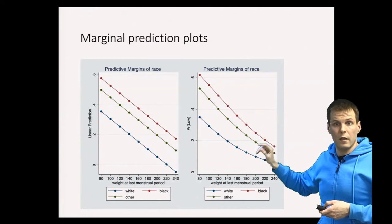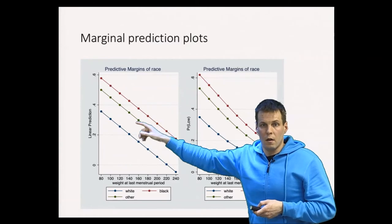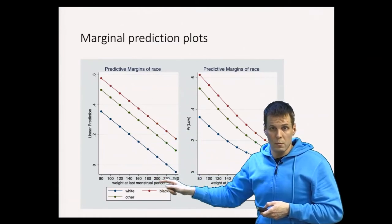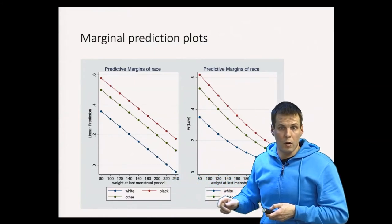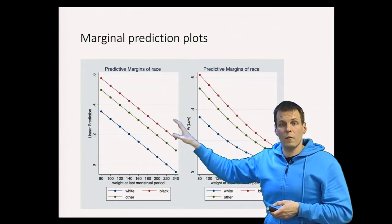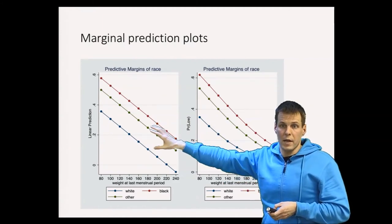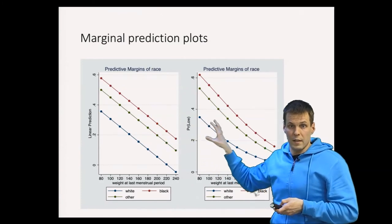But if we don't have any mothers here, so if all white mothers are quite light, then the fact that we predict implausible values when we go beyond our data is not really a problem. Which one of these is better can be justified based on theory, but you can also check empirically which one fits the data better.